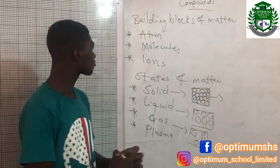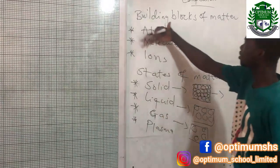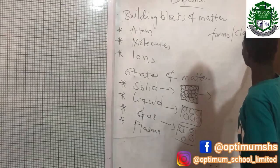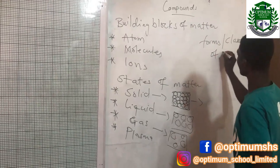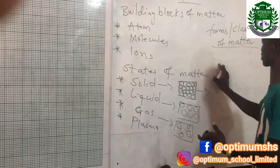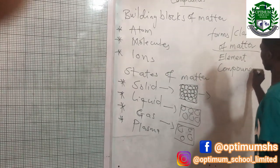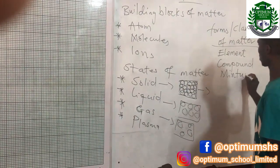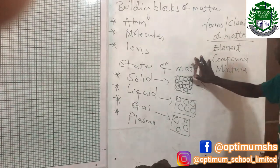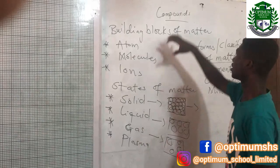Now there is something I also want you to know about the forms or classifications of matter. So the first topic is the building blocks of matter, the second is the states of matter, and the third is the forms or classification of matter. Matter can be classified as an element, a compound, or a mixture. We will take each one and talk about them, but remember that our main aim for today is about compounds.